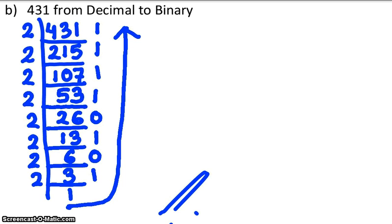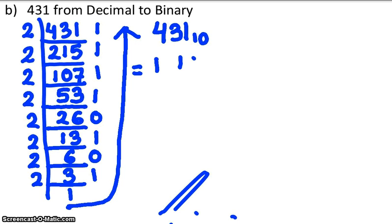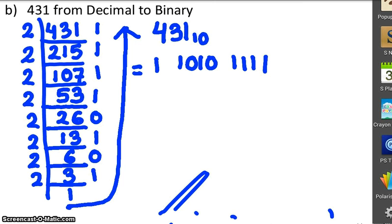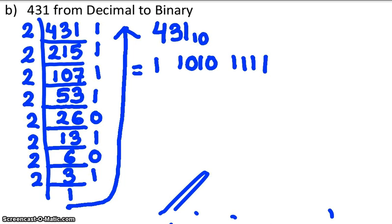So 431 in base 10 is equal to 1, 1, 0, 1, 0, 1, 1, 1, 1 — a total of 9 bits. That is the binary number.